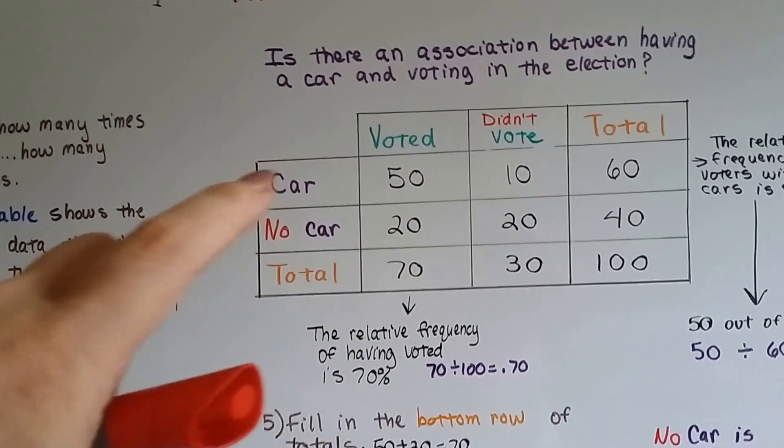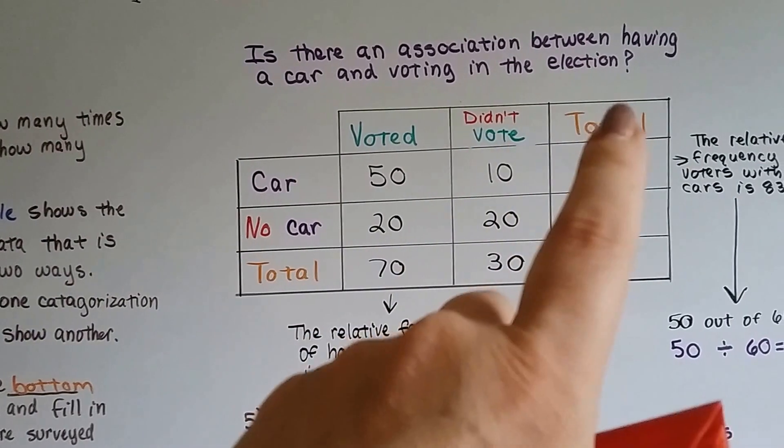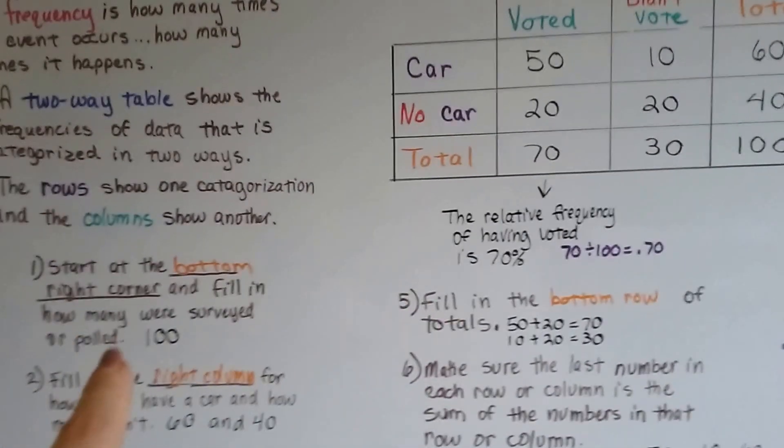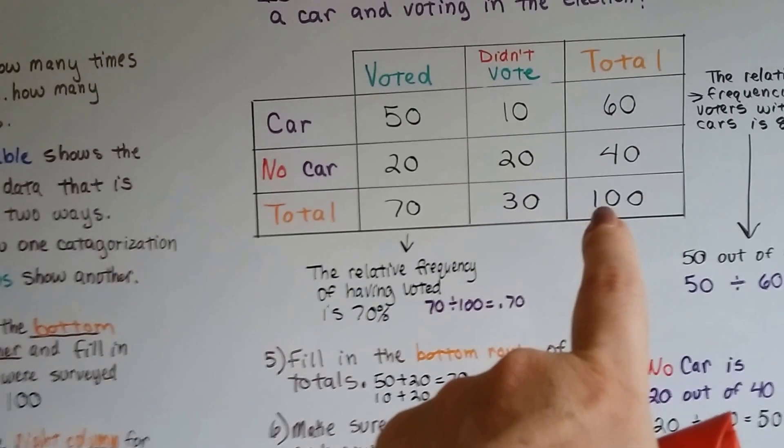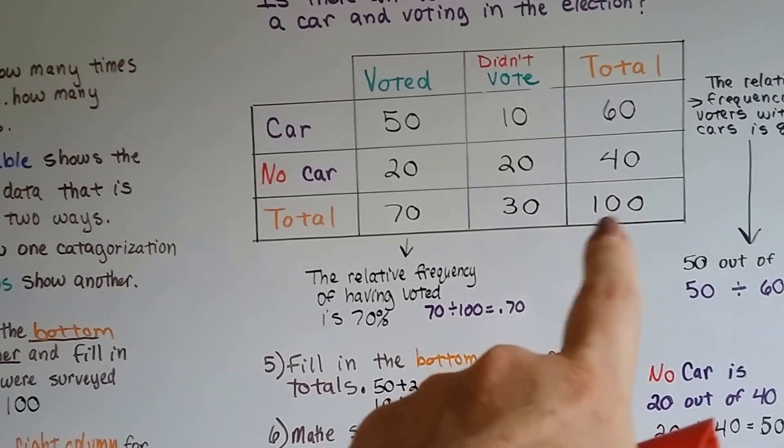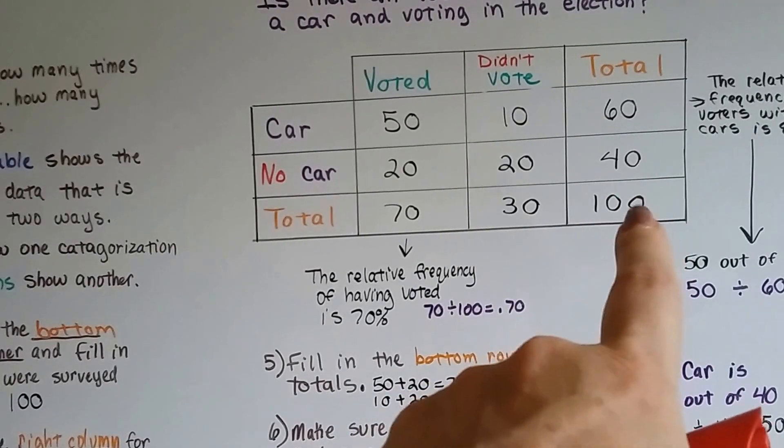We put car, no car, and the total, and voted and didn't vote and the total. We start at the bottom right corner and fill in how many were surveyed or polled. So 100 people were asked, did you vote, did you have a car, did you not have a car? There were 100 people that were asked.